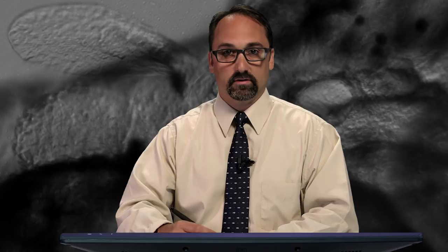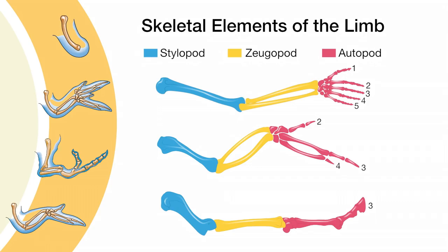Despite potentially dramatic differences in the skeletal elements of limbs from different species, the use of the stylopod, zygopod, and autopod can usually be defined no matter whether it's the chick's wing with only three digits or the horse's hoof, which is its only remaining digit.